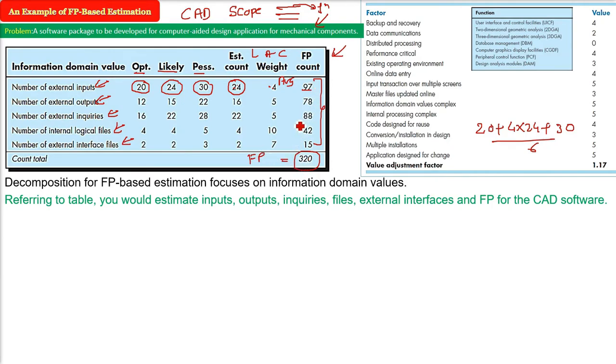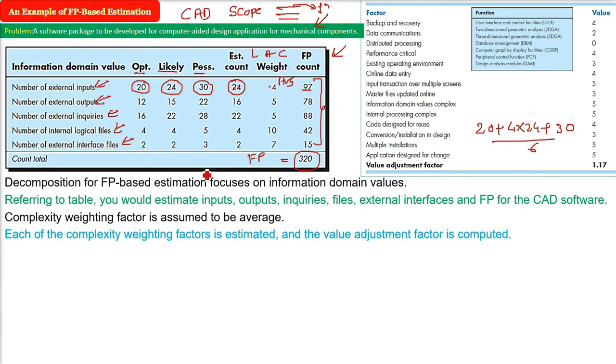Now these function points, 320, because there is a formula for function points. These are not function points right now, these are just count. This is just a count total, not function point. Function point has a proper formula because the adjustment factor has to be computed by these. There are 14 values and we gave value, each of them from 0 to 5, any value, depending upon the weight of these factors in your project.